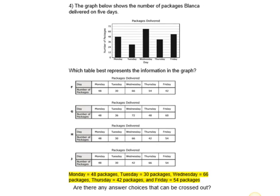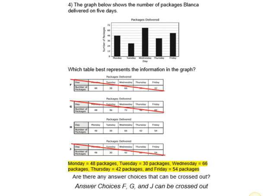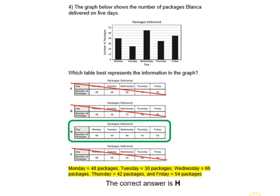Now that we have our information, we take the data from the graph and check which tables match the day and number of packages delivered. If you said answer choices F, G, and J can be crossed out, you are correct. That leaves us with one answer choice: H is the correct answer.